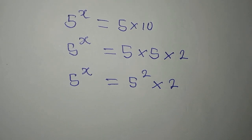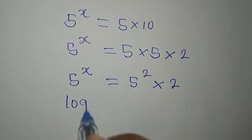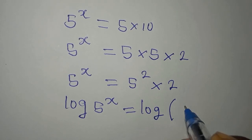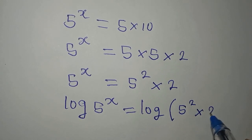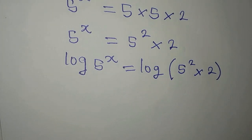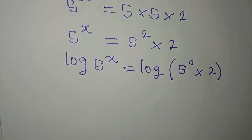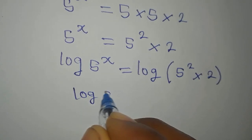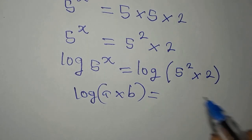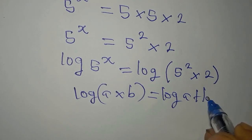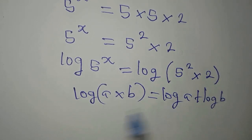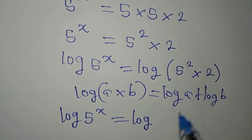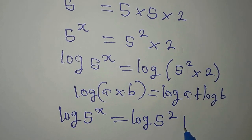Now we take the log of both sides, so we have log of 5 to the power of x equals log of 5 squared times 2. We apply one of the laws of logarithm: log(a times b) is the same as log a plus log b. So we get log 5 to the power of x equals log 5 squared plus log 2.